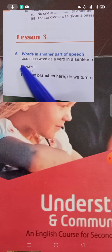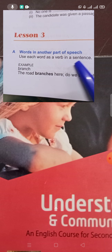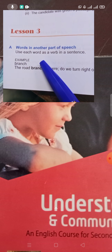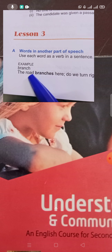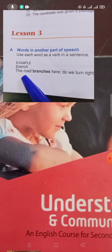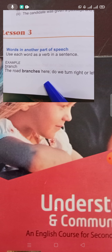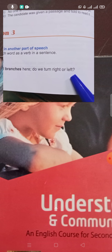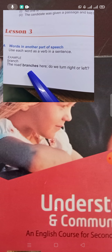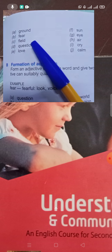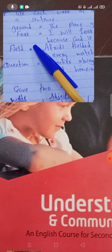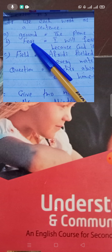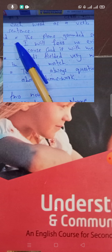Exercise A: What do you have to do? Use words in another part of speech — use each word as a verb in a sentence. For example, 'branch': 'The road branches here, do we turn right or left?' So 'branches' is used as a verb. You have to use these words as a verb in your sentences.